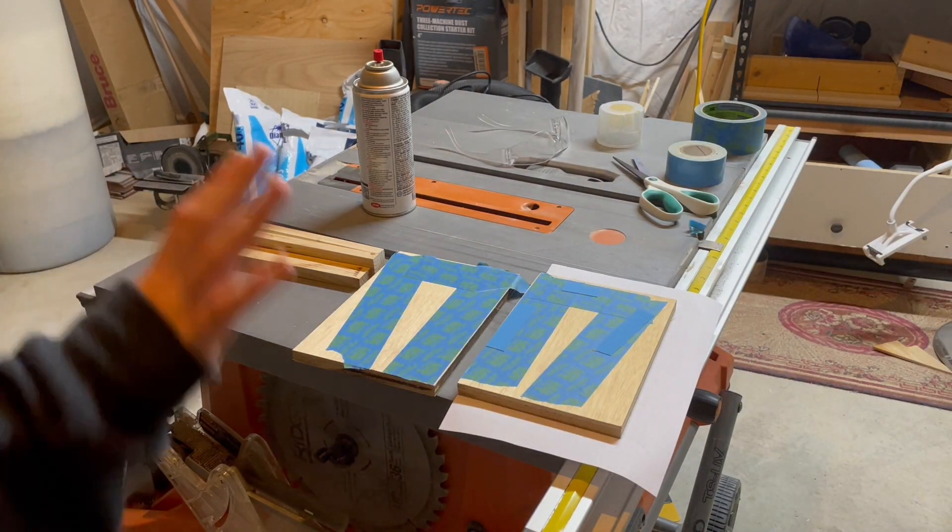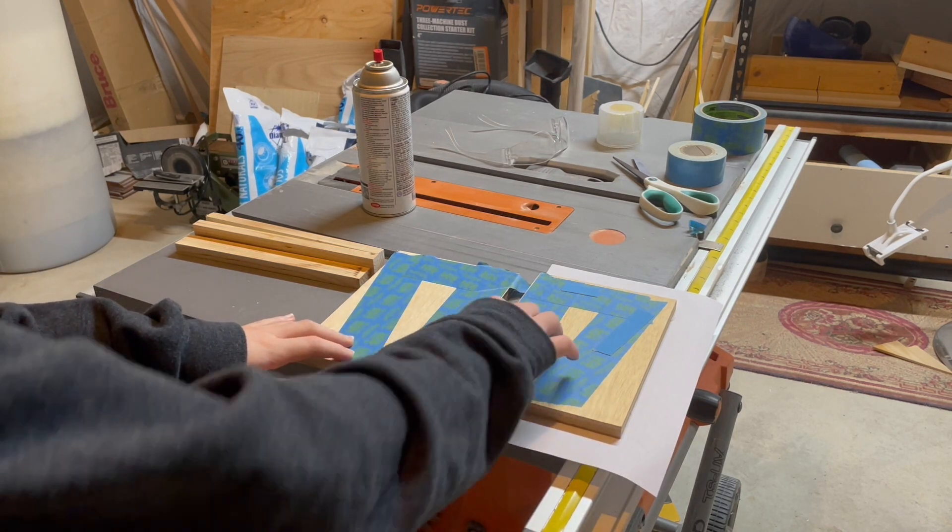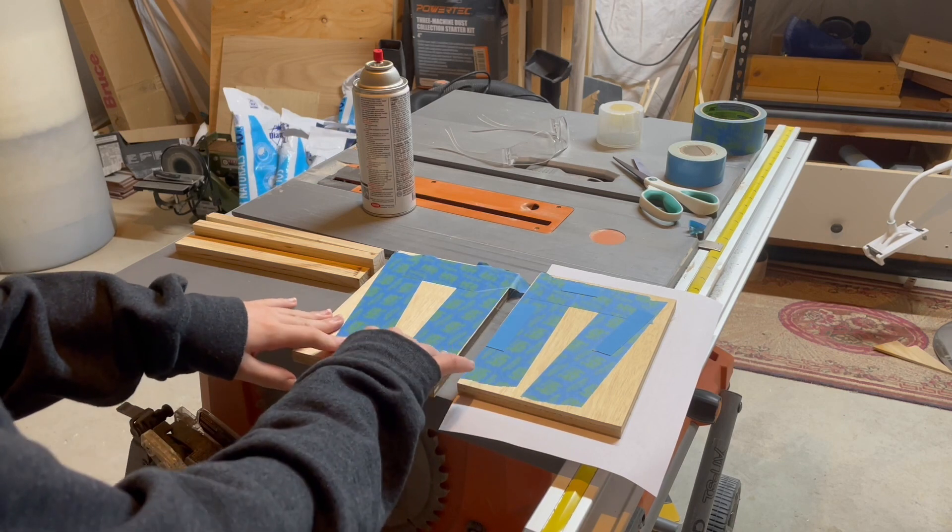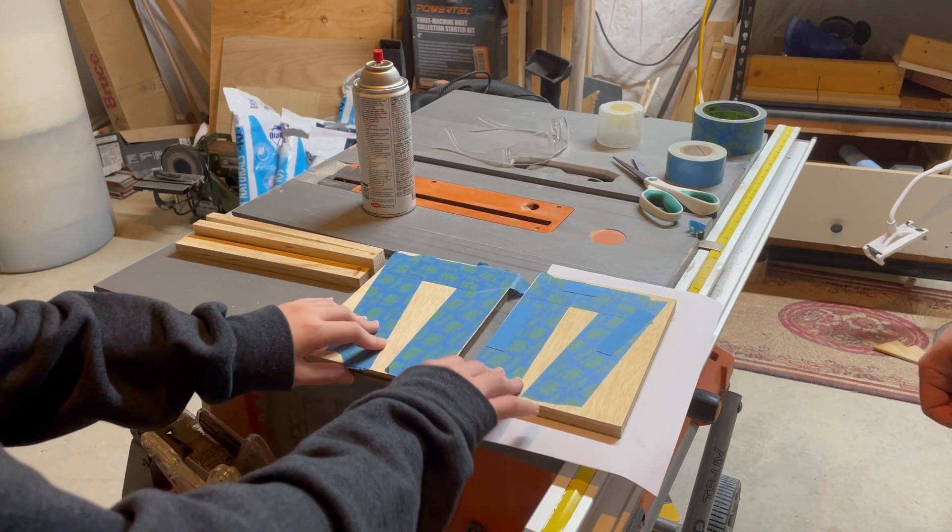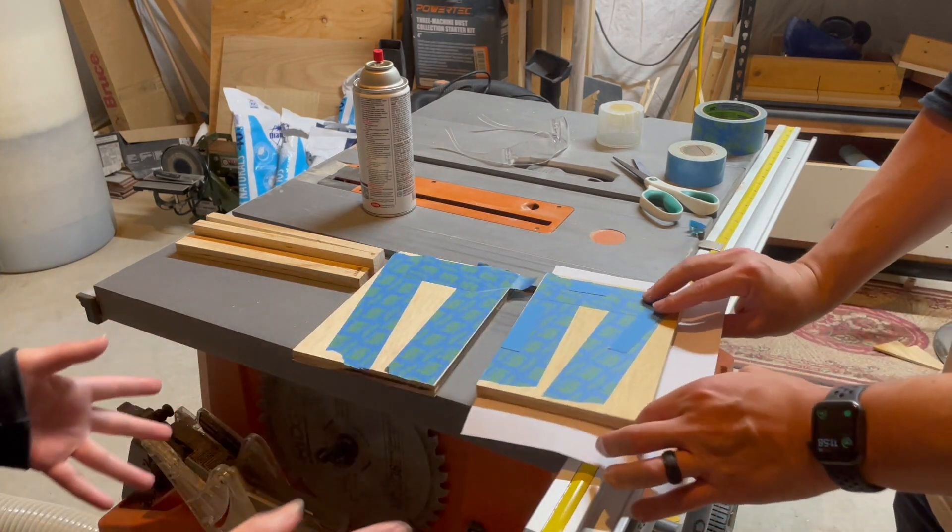Okay, so we're done cutting out all our wood, and what we did here was we put some tape here to protect from the double-sided tape completely sticking to the wood, so we can later pull it apart. And we made sure to not have this double-sided tape where we're going to be cutting out.